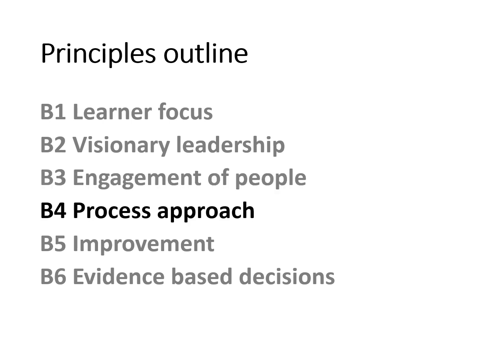The process approach states that activities of the organization should be understood and managed as interrelated processes that are part of a coherent system working in tandem to achieve objectives — a system running through interrelated and interconnected processes. B5 is Improvement: there should be a continuous, ongoing focus on improvement. Improvement helps to maintain or improve performance, allowing for appropriate reaction to changes in external and internal issues.